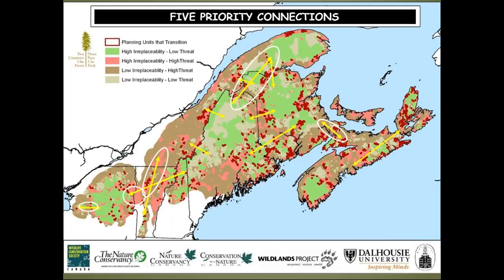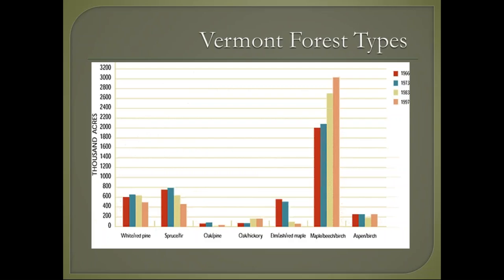Two Countries, One Forest is an international science consortium that identified five different linkages important to maintain over time: between the Tug Hill and the Adirondacks, the Adirondacks to the Southern Greens, the Northern Greens to the Suttons, up into the Three Borders region, and across from New Brunswick to Nova Scotia. Each of those linkages needs to be maintained to keep this whole forest intact. Now we're going to talk more specifically about Vermont, though this pertains to the entire ecoregion because the forest species composition is the same across it.